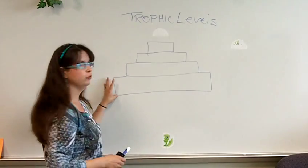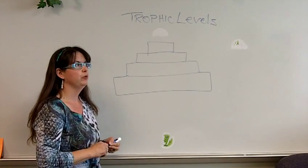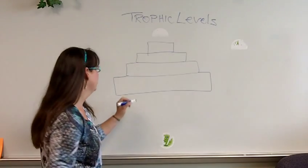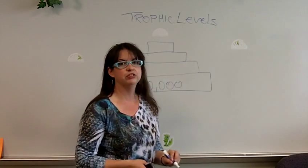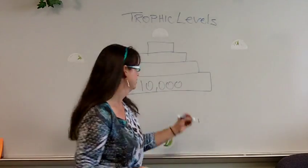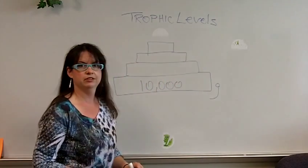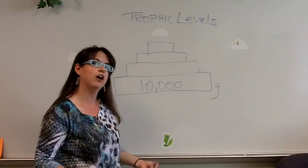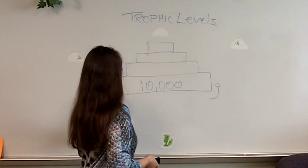So at the very bottom of the food chain is always going to be your plants. And let's say that we have 10,000 pounds, or in the metric system we use, let's say, grams of plants. Let's say hay and alfalfa that an animal can eat. So this is grass.